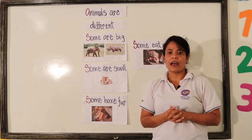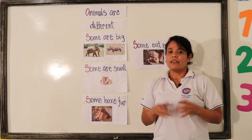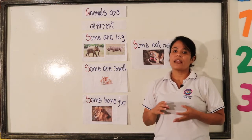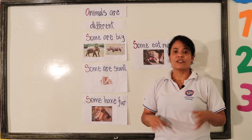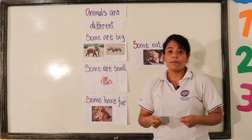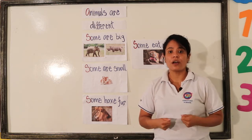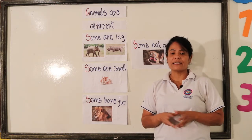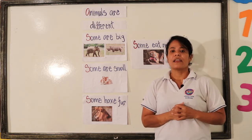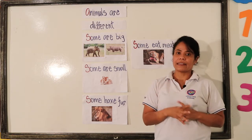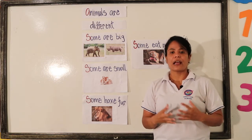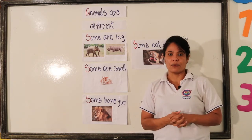There are many kinds of animals. There are animals that can swim, animals that can fly, animals that can jump, and animals that can run. There are animals that have just two legs, and there are animals that have four legs. There are many different kinds of animals.